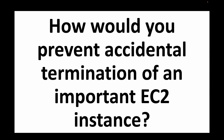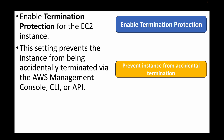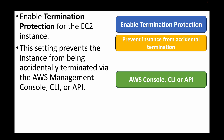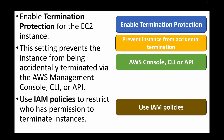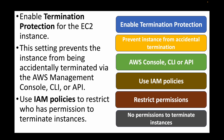The next question: how would you prevent accidental termination of an important EC2 instance? AWS provides a termination protection feature, which we can enable to prevent any accidental termination or deletion of EC2 instances. This setting can be configured via the AWS console, AWS CLI, or APIs. We can also use IAM policies to restrict permissions — for example, not granting users the permission to terminate instances.